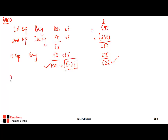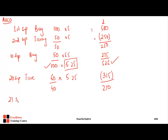On 20th September, we issue 60 units at the average price of £5.25. So 60 × £5.25 = £315. After this issue, the remaining value is £525 − £315 = £210 for 40 units. On 27th September, we buy 100 units at £5.60 = £560, bringing total value to £210 + £560 = £770 for 140 units.